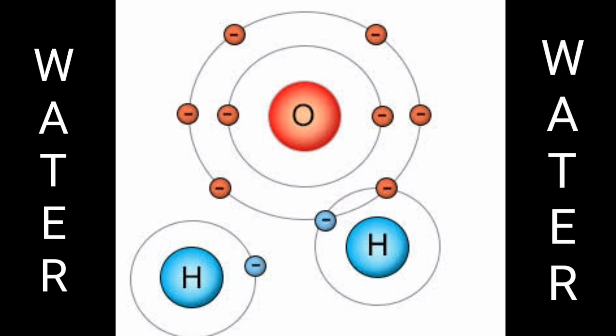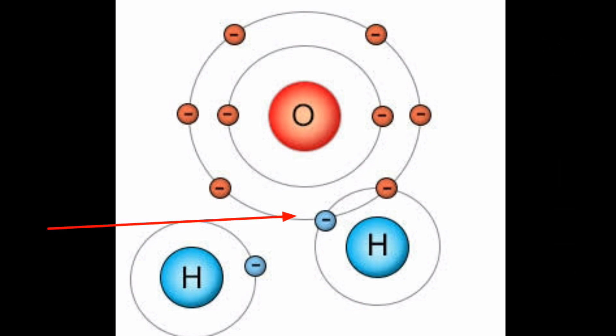In hydrogen, there is one valence electron and in oxygen, there are six valence electrons. Now in order to complete the duplex structure of hydrogen and the octet structure of oxygen, hydrogen is sharing electrons with oxygen.